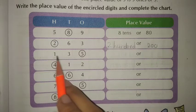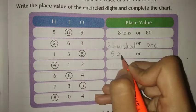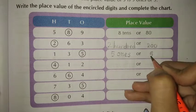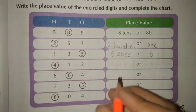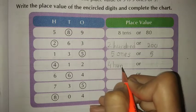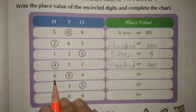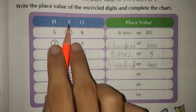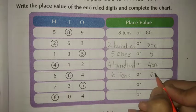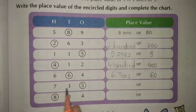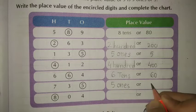Next, 135 — 5 is ones, so here 5 ones or only 5. Next, 412 — 4 ke upar circle, 4 is hundreds, so here write 400. Next, 664 — 6 is tens, so here write 6 tens or 60. Next, 735 — 5 is ones, so here write 5 ones or 5.